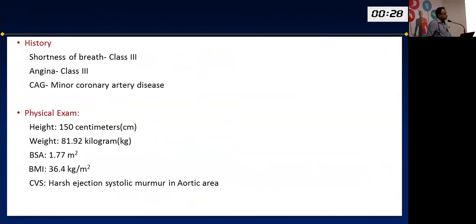A final question addressed the association of severe aortic stenosis with ischemic heart disease — approximately 80 percent of severe AS patients also have coronary artery disease. For most patients who have CAD requiring intervention and are not surgical candidates, we would treat the coronary disease first before proceeding with TAVI.